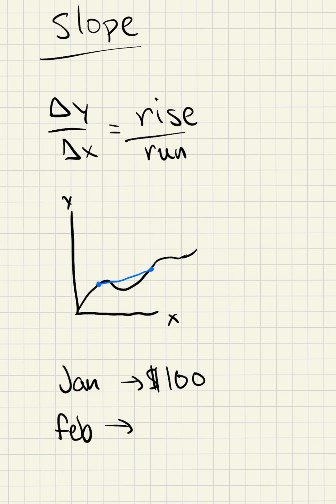Actually, let's do March. March is a little bit better for this example. By March, I have $300.